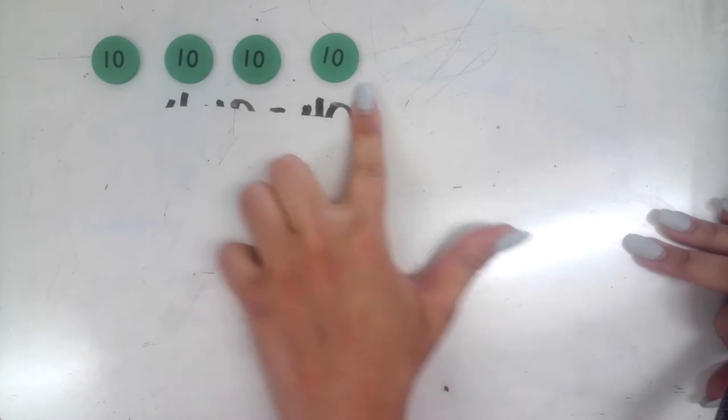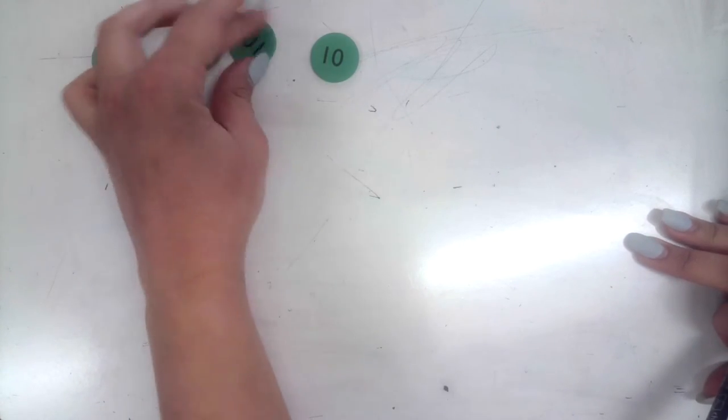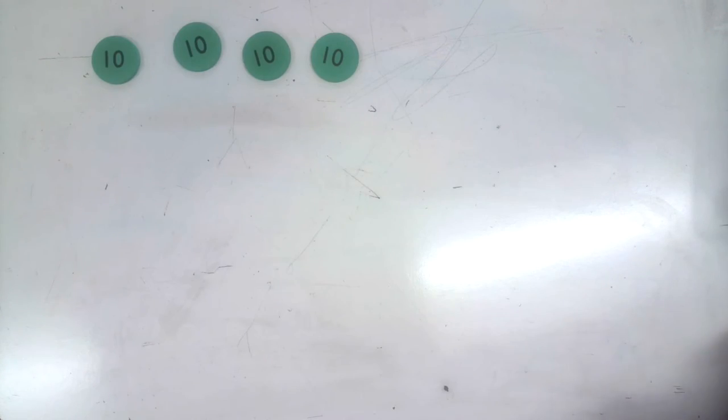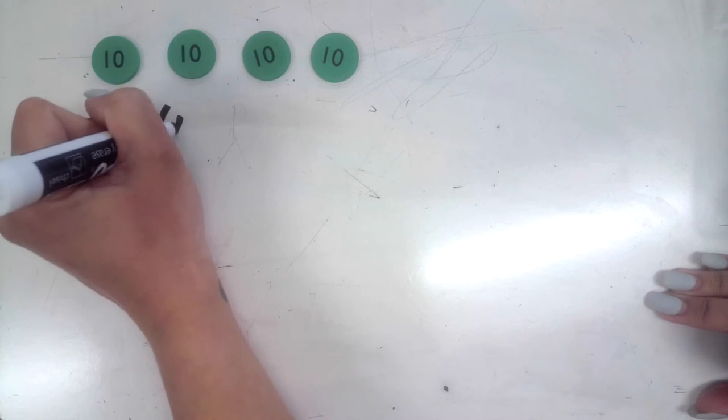So I'm going to keep that in mind, and I'm just going to write actually right below this just the expression, not the equation. I'm not sharing the answer. The expression is right here in expanded form. This is representing 4 times 10.